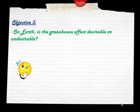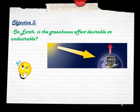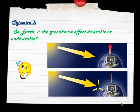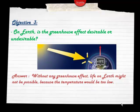Now for our last objective: on Earth, is the greenhouse effect a desirable or undesirable effect? Without any greenhouse effect the Earth's average temperature would be minus 18 degrees Celsius — pretty cold. With the greenhouse effect it's a nice plus 15 degrees. Without any greenhouse effect, life on Earth might not be possible because the temperature would be too low. So it is somewhat of a desirable effect — we want some greenhouse effect.